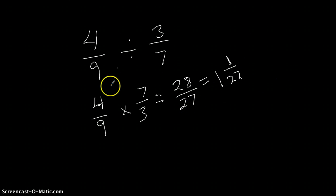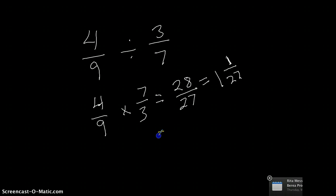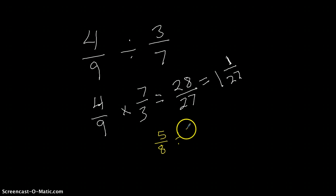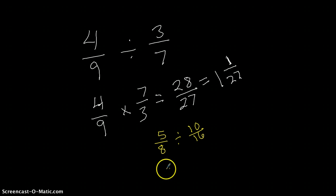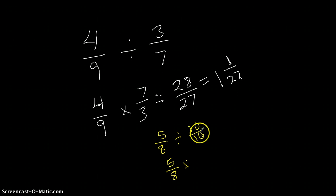Now I'll do one more example — I'll leave the previous one up in case we need to refer to it. Let's have five-eighths divided by ten-sixteenths. I did this one on purpose because there's a neat trick you can do when dividing fractions. Like before, I make my first fraction the same: five-eighths. I change the division symbol to multiply. And I do the inverse of ten over sixteen, giving me sixteen over ten.